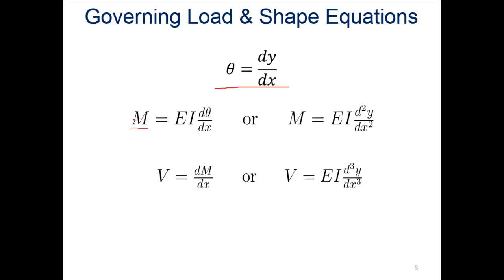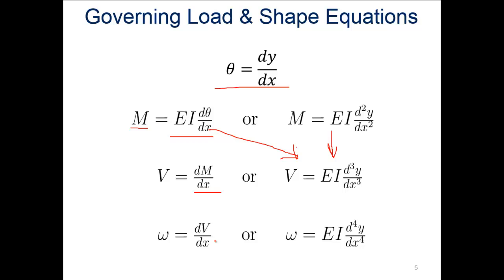If we take the derivative of the moment with respect to X, we get the transverse shear force, which gives us the third derivative of Y with respect to X. Taking the derivative of the transverse shear with respect to X gives us the overall load — the fourth derivative of Y with respect to X times EI. These equations will come back into play later as we analyze and derive the information needed to solve our beam.